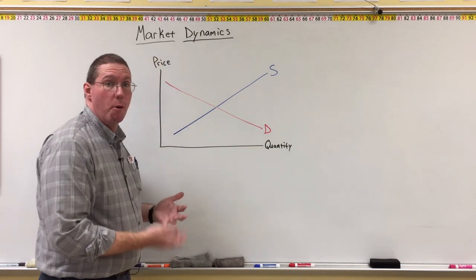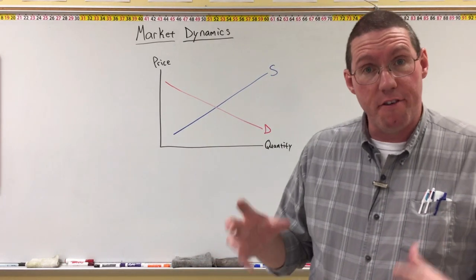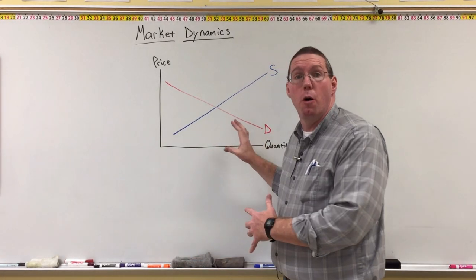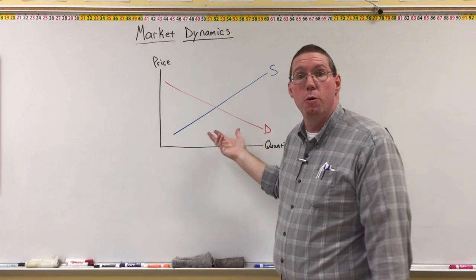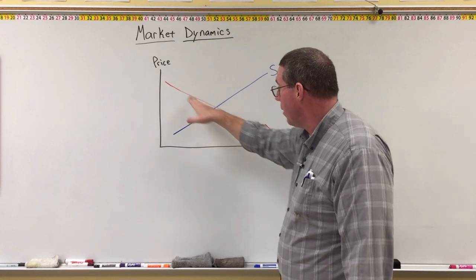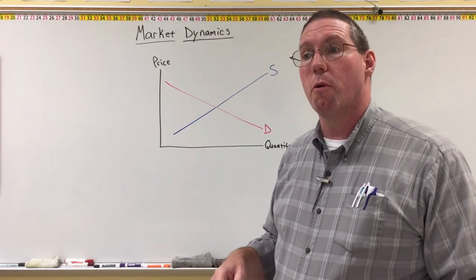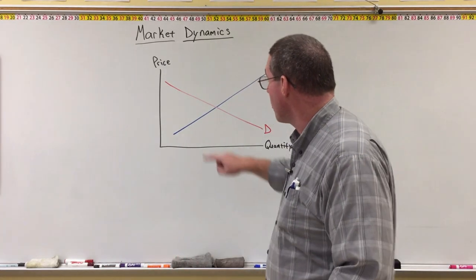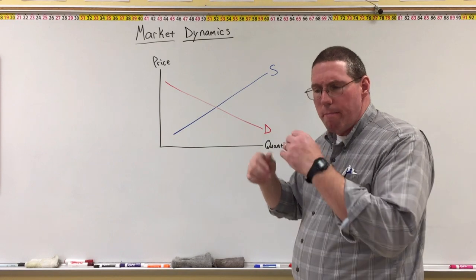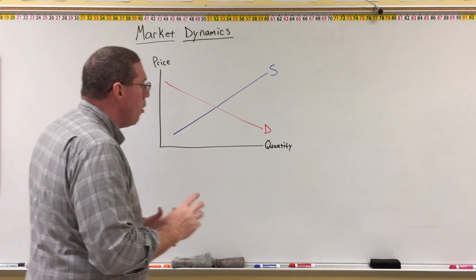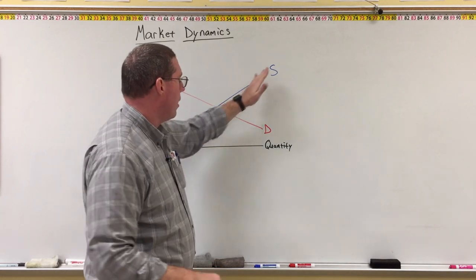We do not care what the product is, but we can imagine all different kinds. It can be a physical good, like a phone or a car — the supply and demand for cars. It can be food at a restaurant, like the supply and demand for Chick-fil-A. It can also be a service, like phone service for Verizon or AT&T. Most products follow this basic format of a downward sloping demand curve and an upward sloping supply curve.